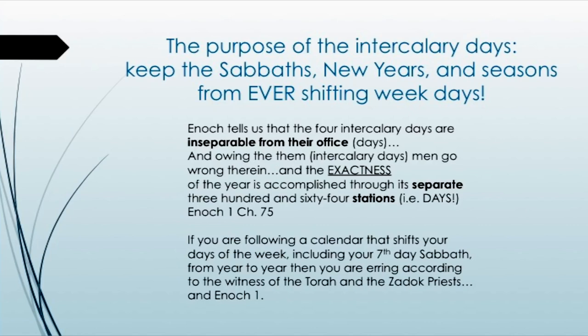The purpose of the intercalary days is to keep the Sabbaths, the New Years, and the Seasons from ever-shifting weekdays. Enoch tells us that the four intercalary days are inseparable from their office. And owing to them — the intercalary days — men go wrong therein. The exactness of the year is accomplished through its separate 364 stations, i.e. days. You cannot separate those intercalary days from the third day of the week; they are always the third day of the week. So if you are following a calendar that shifts your days of the week, including your seventh-day Sabbath, from season to season or year to year, then you are erring according to the witness of the Torah, the Zadok priests, and Enoch 1.